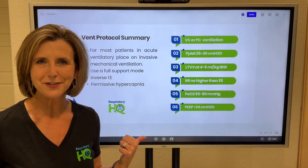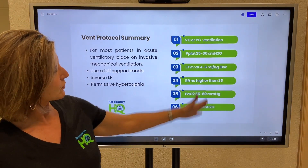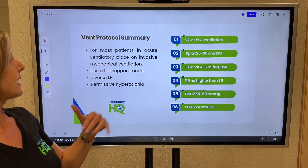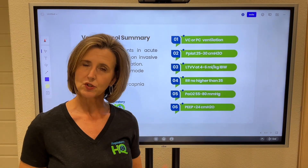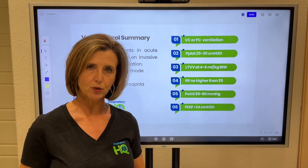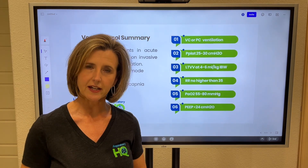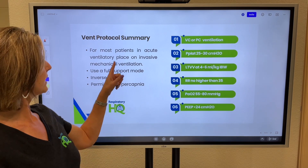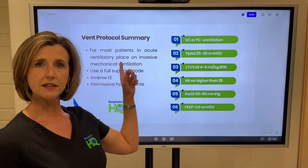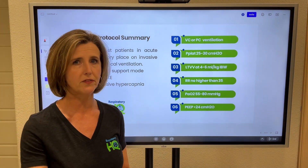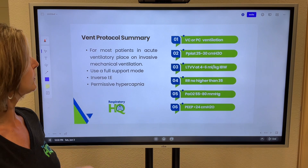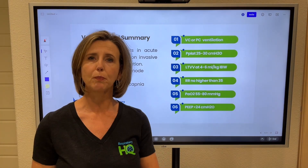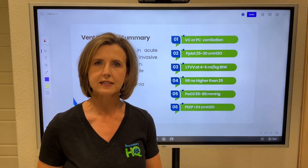One slide ought to do it. These are the main things you need to pay attention to. If we end up with a patient that goes into acute ventilatory failure because of ARDS, we're not going to mess around with a trial run of BiPAP. We're going to go ahead and commit to intubating them — put a tube in, put them on the vent. When you put them on the vent, we need to use a full support mode, so you're really talking AC mode.